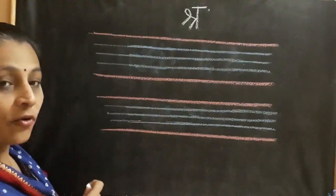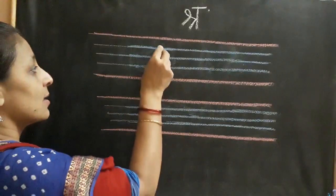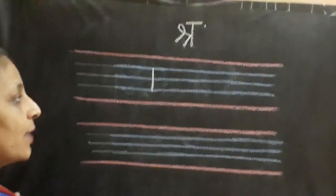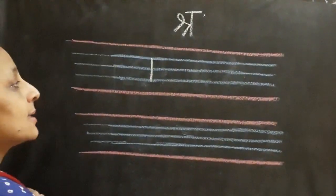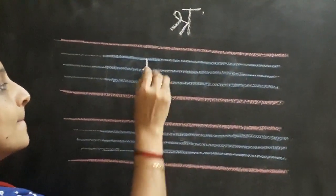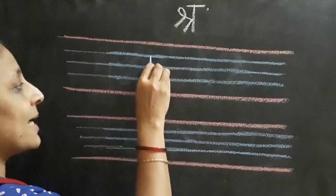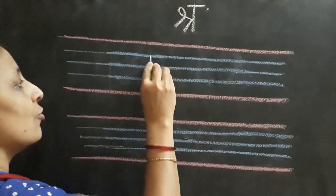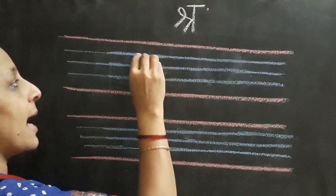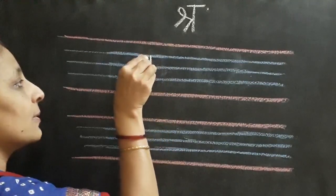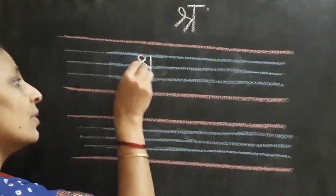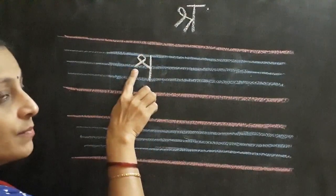Now children, first of all, we are going to write one standing line. We are going to draw one standing line from first to third blue line. Now the second thing - from the middle of this standing line, from the second blue line, we are going to go up and touch the first blue line and make a loop. Have you made a loop? So now we will come down and we will stop at the middle blue line.